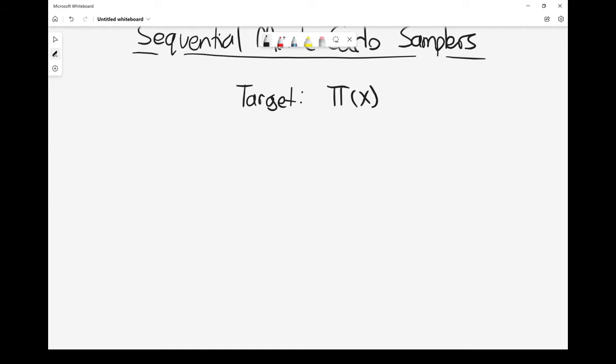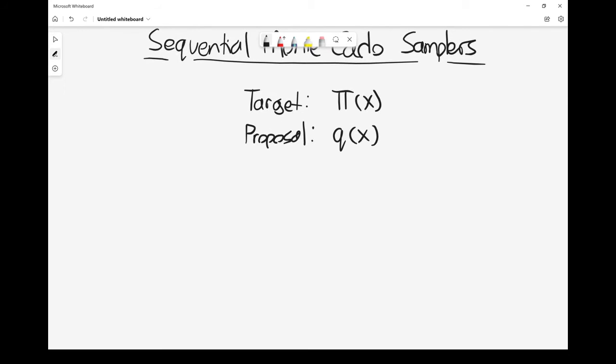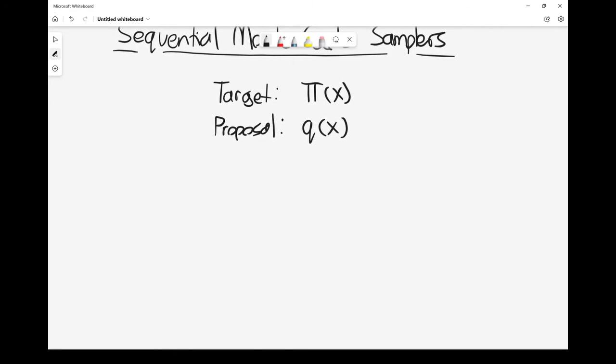What we do is we define something called a proposal distribution, which is usually written as Q. We're going to say that Q is easy to sample from, so it's a Gaussian or something like that. So we generate a load of samples, which I'm denoting with superscripts, so x¹, x², ...xⁿ from Q.